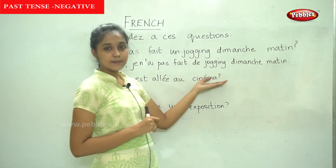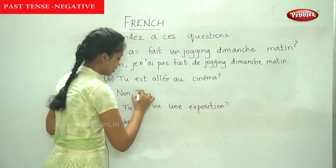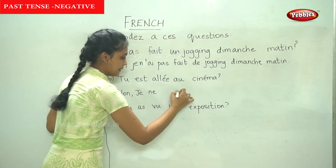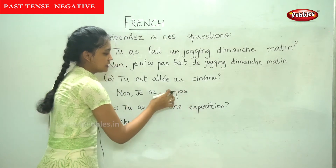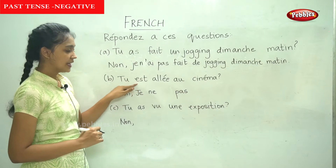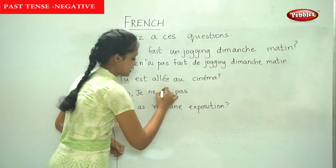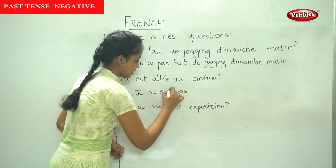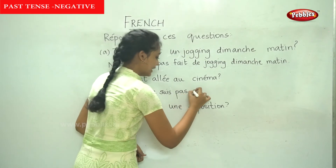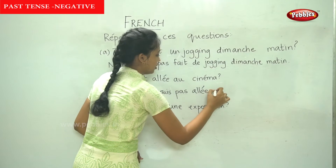The next question: tu es allé au cinéma? No. Again, tu becomes je. We have to add ne and pas. The auxiliary here is être — conjugated as 'suis' for je. So the answer is: je ne suis pas allé au cinéma.